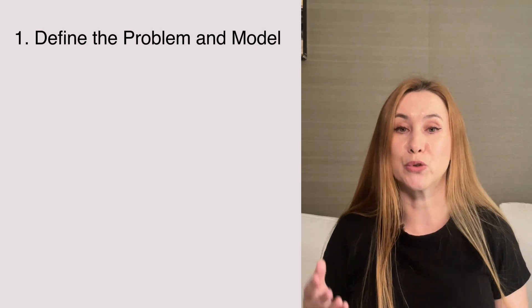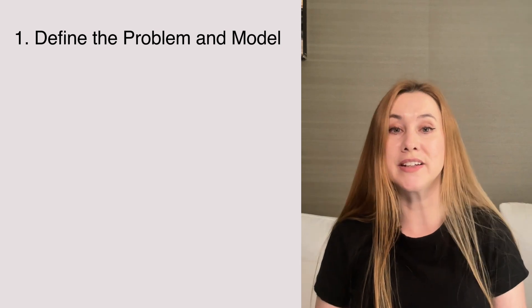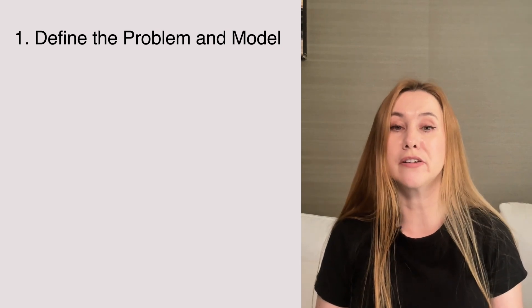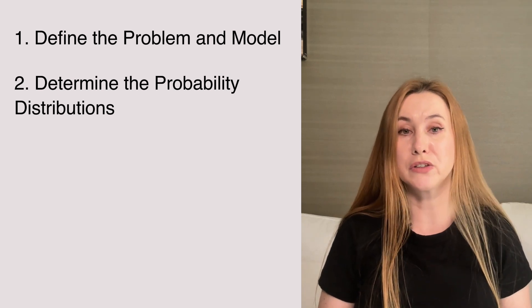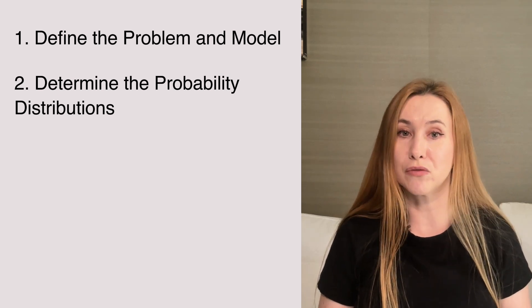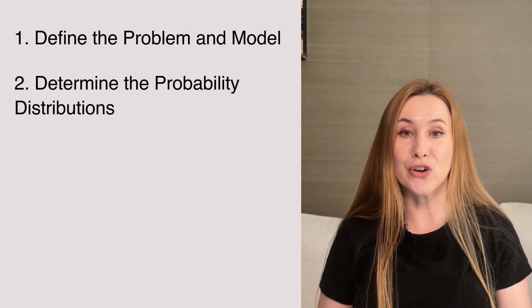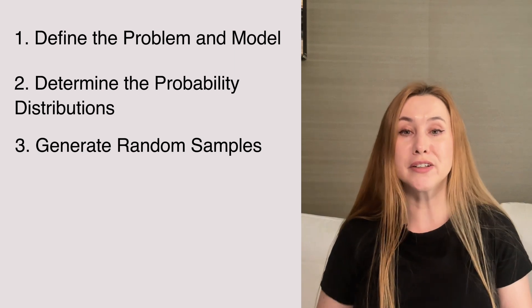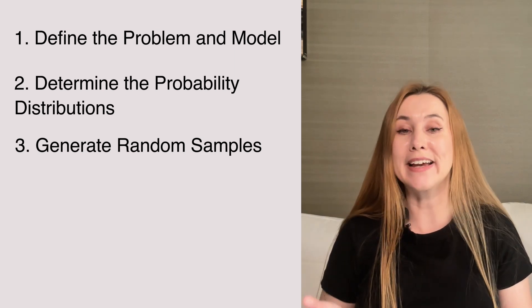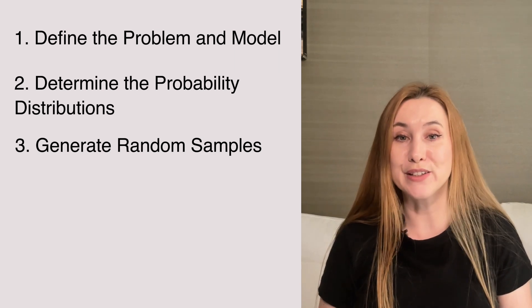Here are the steps in Monte Carlo simulation. You start by defining the problem you want to solve and the model or system that represents this problem. This involves identifying input variables and their relationship to the output variables. The next step is to identify the probability distribution for the uncertain variables. These distributions describe the likelihood and range of possible values for each uncertain input. Then you generate random samples using a random number generator for each uncertain input variable based on their probability distribution.